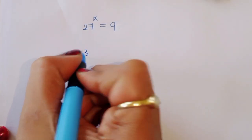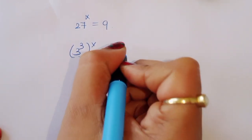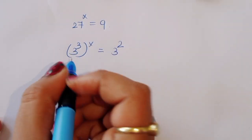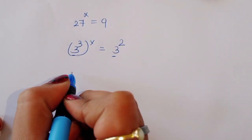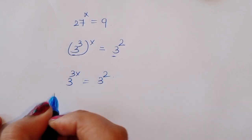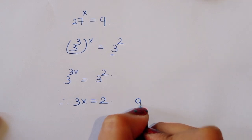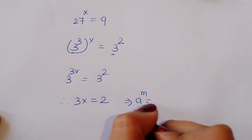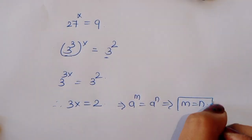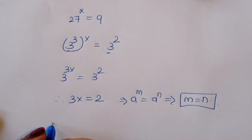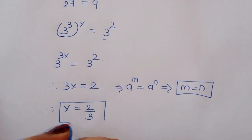Next, we can write 27 power x as 3 power 3x is equal to 9, that is 3 squared. Comparing both sides, 3 power 3x equals 3 squared. Therefore 3x is equal to 2, because using the formula a power m equals a power n implies m equals n. Therefore x is equal to 2 by 3. By both methods, the value of x is 2 by 3.